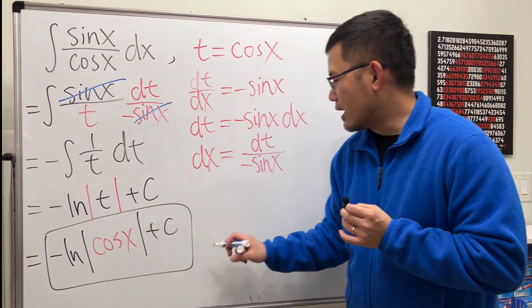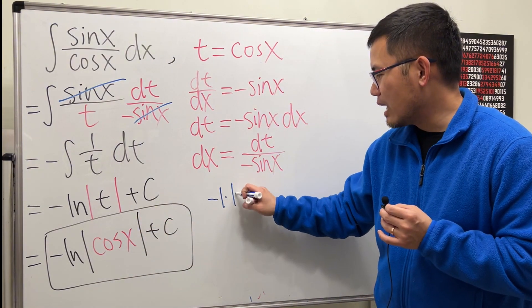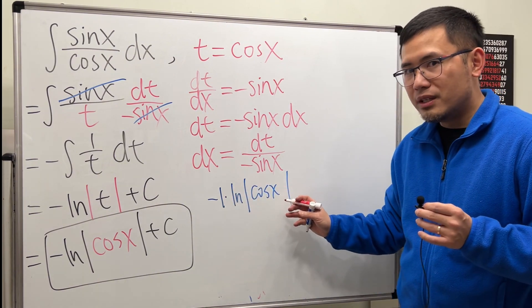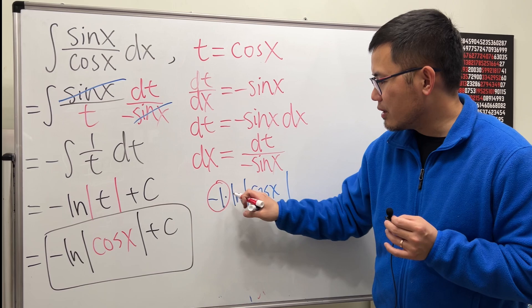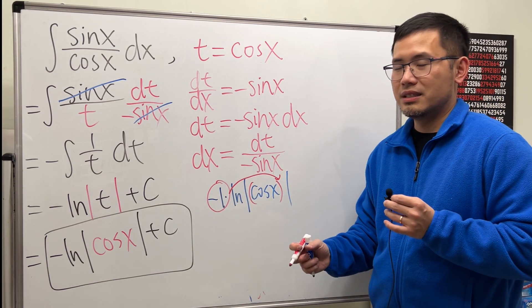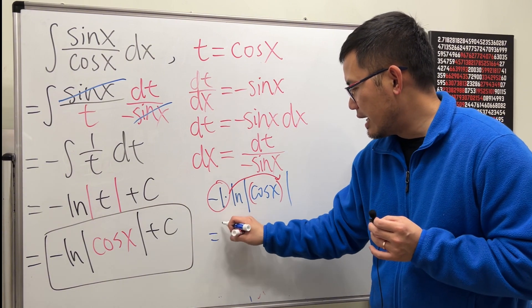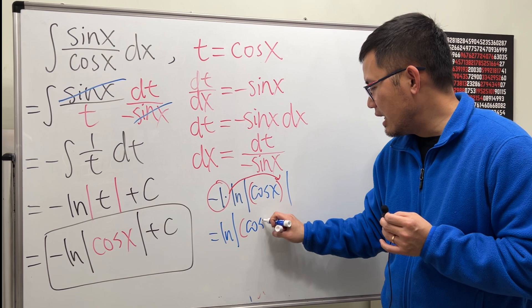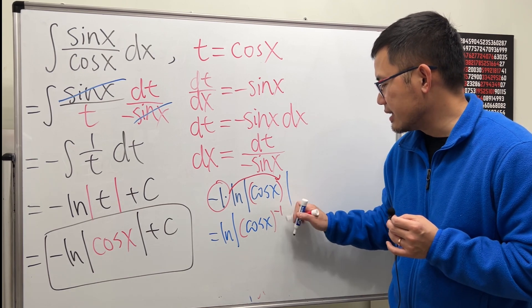Look at this part. Negative 1 times ln absolute value of cosine x. By the log property, we can put a number right here, up here, to make that into an exponent. So, we get ln absolute value of cosine x raised to the negative 1 power.